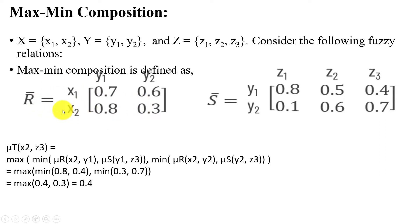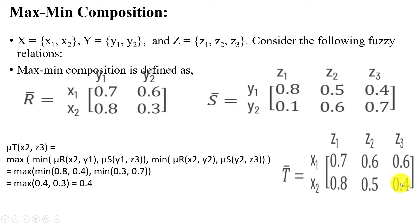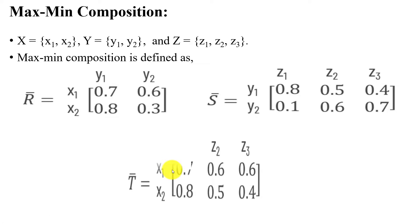For the second row and third column: T(x2,z3): min(R(x2,y1), S(y1,z3)) = min(0.8, 0.4) = 0.4, and min(R(x2,y2), S(y2,z3)) = min(0.3, 0.7) = 0.3. Max{0.4, 0.3} = 0.4, so T(x2,z3) = 0.4. This completes the max-min composition, represented by the third matrix T with rows x1, x2 and columns z1, z2, z3 — the X cross Z matrix.